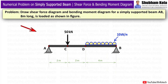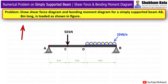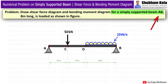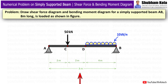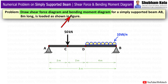In this video, we are going to learn how to draw a shear force diagram and bending moment diagram for a simply supported beam as shown in the figure. The problem states: draw a shear force diagram and bending moment diagram for a simply supported beam AB, 8m long. The beam carries a uniformly distributed load of 10 kN per meter over a length of 4m, and a point load of 50 kN acting at point C.